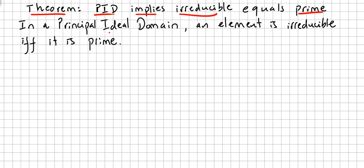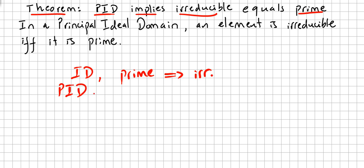In the previous video we saw that in an integral domain, prime implies irreducible, and we saw the proof for that. Now in this video we jump into principal ideal domains, and we are going to see that an element is irreducible if and only if it is prime. So the theorem is: in a principal ideal domain, irreducible equals prime.